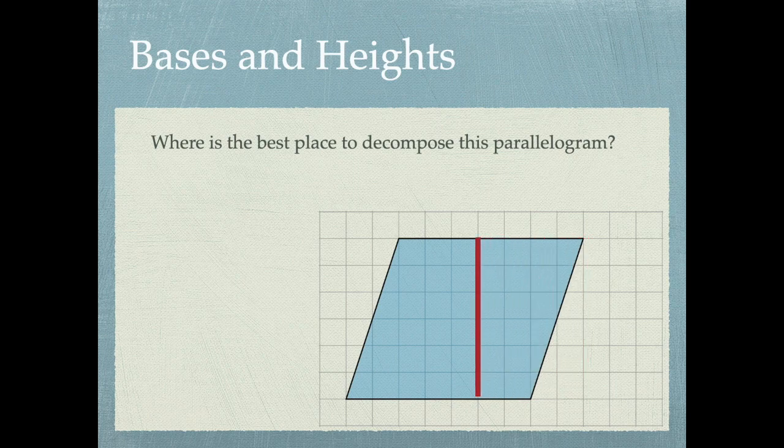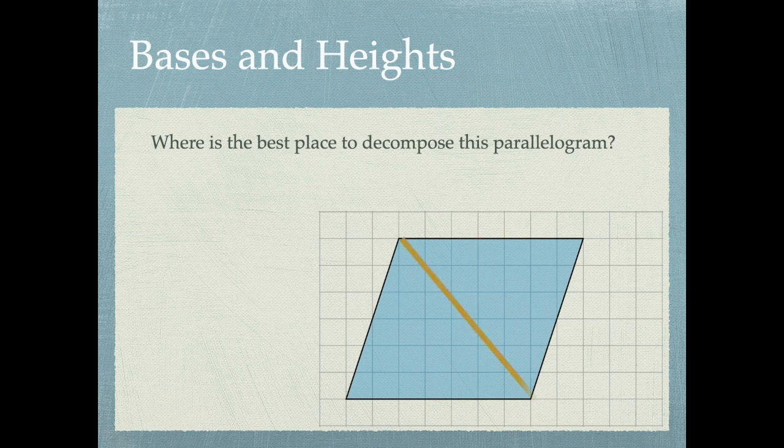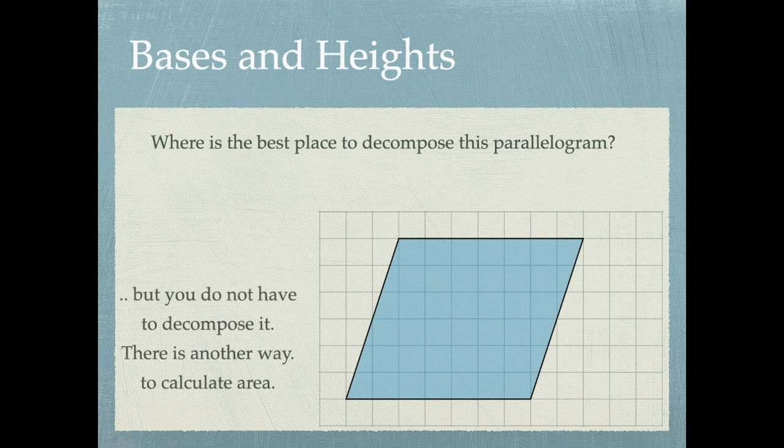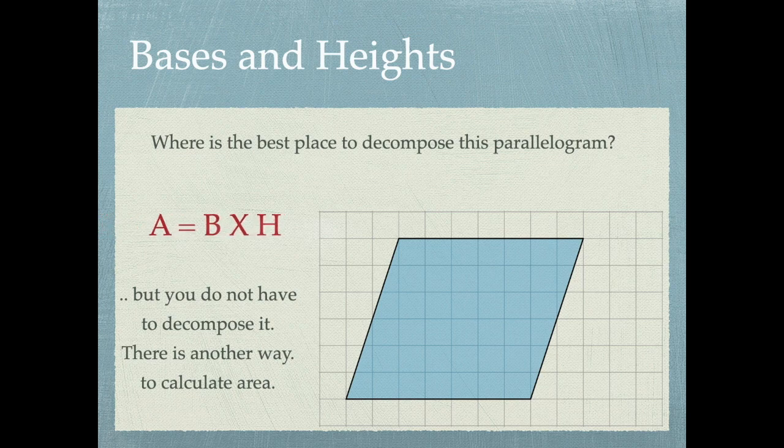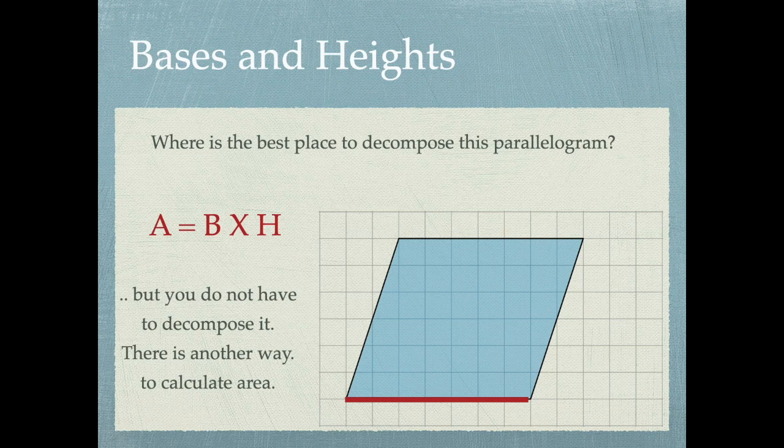In fact, if I wanted to, I could decompose it anywhere. Like right there. But you actually don't have to decompose it. There is another way to calculate area. So we could count the boxes. We could decompose it into easier to count shapes. Or we could use the formula. Area equals base times height, ABH. In which case I count the length of a base: 1, 2, 3, 4, 5, 6, 7. I count the height: 1, 2, 3, 4, 5, 6. Seven times six is 42. The area of this parallelogram is 42.